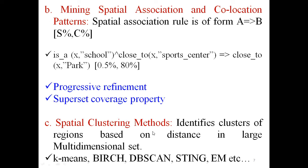Spatial clustering means identifying clusters — grouping data based on similarity in a large dimensional set, using measures like Euclidean distance to determine similarity. Various clustering methods include BIRCH clustering, density-based clustering, K-means algorithm, DBSCAN, dimensionality reduction, and STING. These are different algorithms for clustering in spatial data mining.